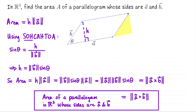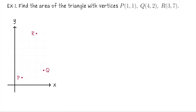So the area of a parallelogram in R3 whose sides are a and b equals the length of the cross product a cross b. Although the cross product only makes sense in three-dimensional space, you can also use this formula to calculate the area of a parallelogram in R2. In our next example we'll find the area of a triangle whose vertices are in the xy-plane.